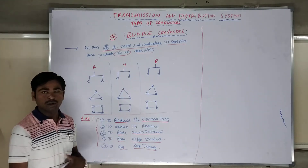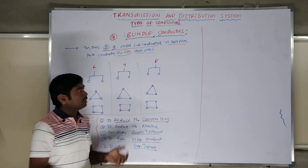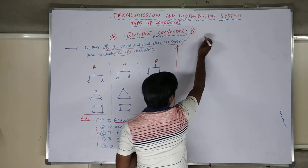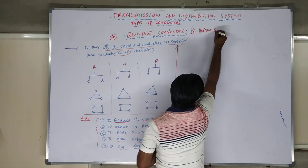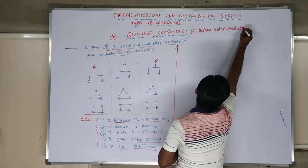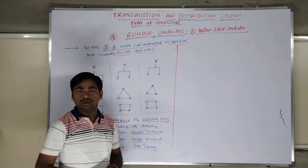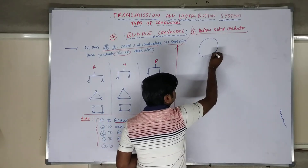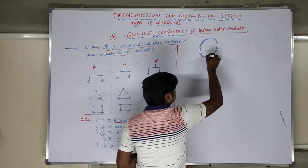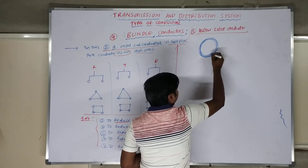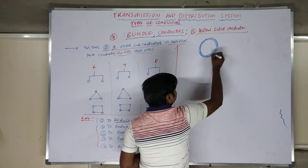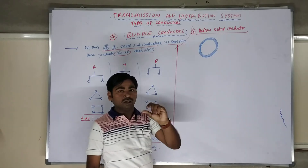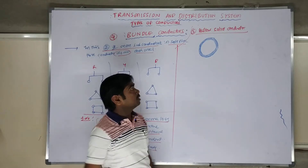That is the advantage of bundled conductors. I hope you understand. Next we have the fifth different type of conductor — nothing but a hollow solid conductor. The fifth type is called a hollow solid conductor. In a hollow solid conductor, we take a big conductor and make it in a hollow shape, like a pipeline — the total portion is like a pipe and there is no material in the center.